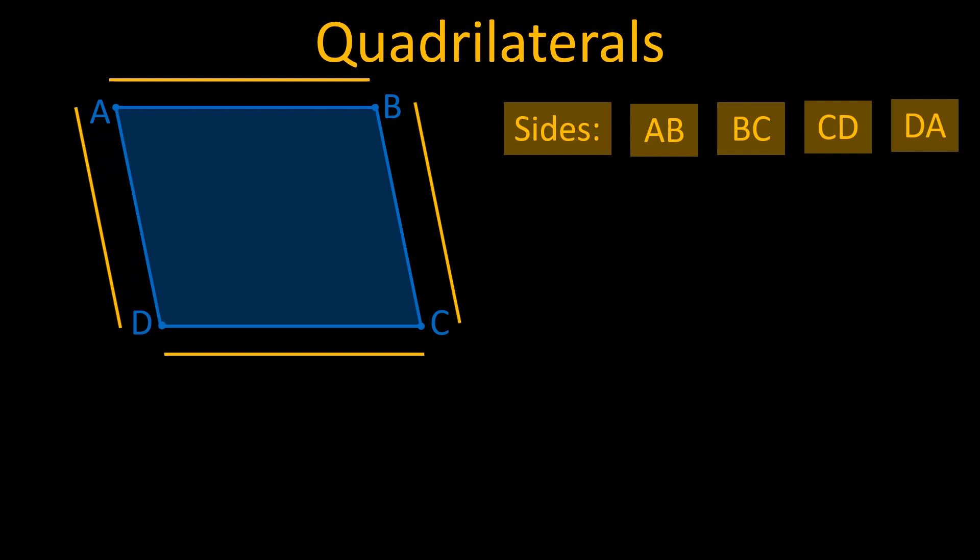Sides AD and BC are opposite sides, while sides AB and BC are adjacent sides.